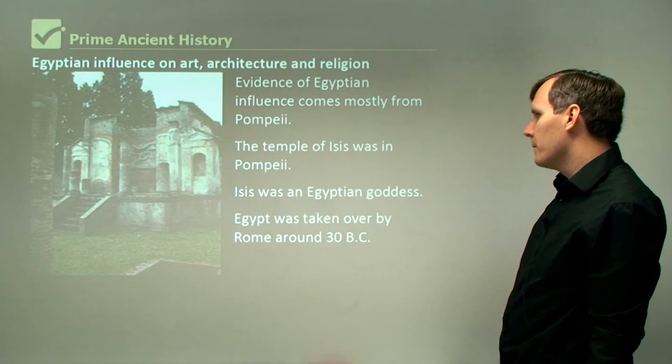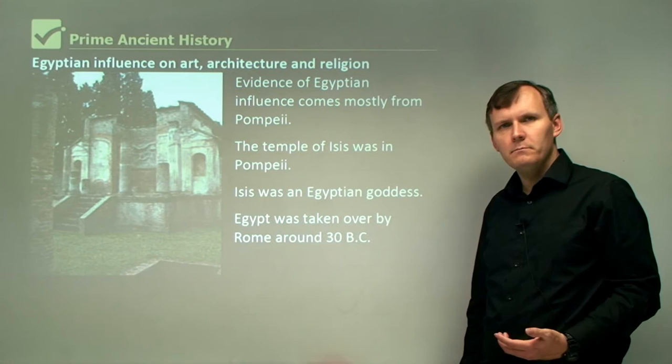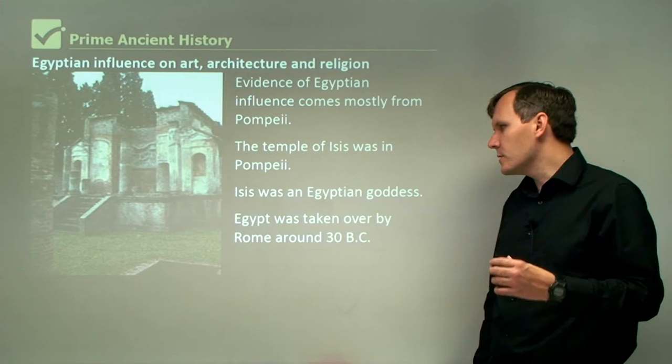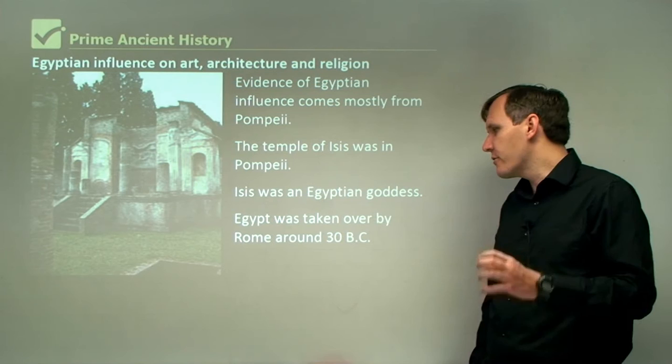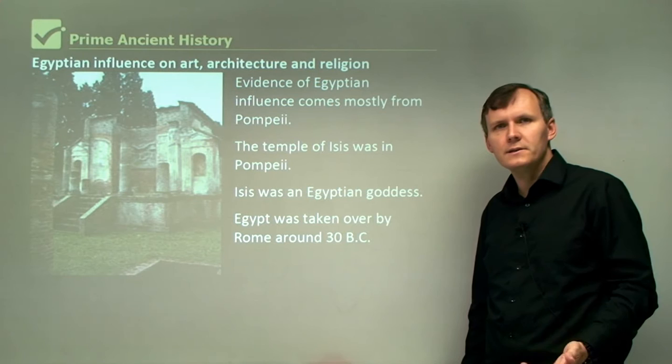Isis was an Egyptian goddess, and Egypt was taken over by Rome around 30 BC. You might ask why Egypt would be influential over Pompeii. One of the possible reasons is that Egypt was taken over by the Roman Empire around 30 BC with the death of Cleopatra. Octavian, who later became known as Augustus, took over Egypt, and so Egypt was incorporated into the Roman Empire.